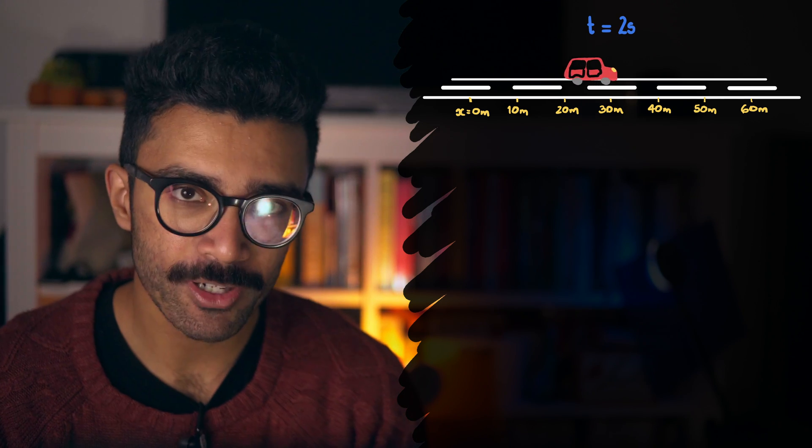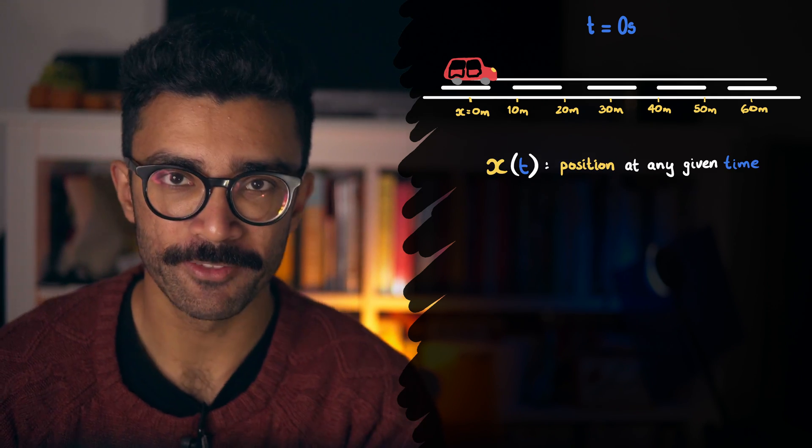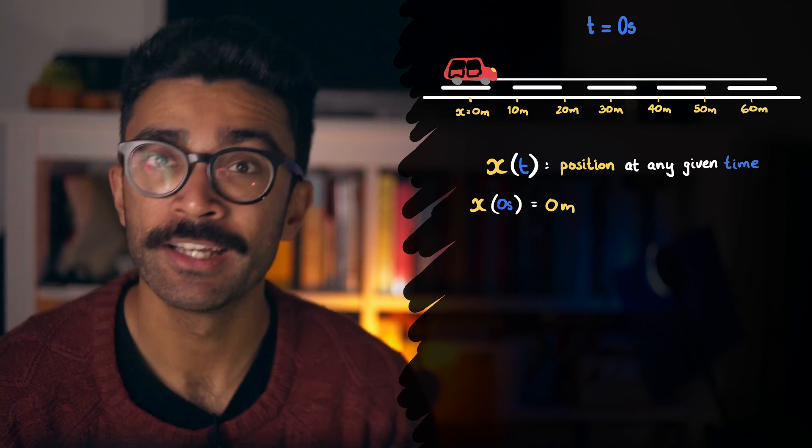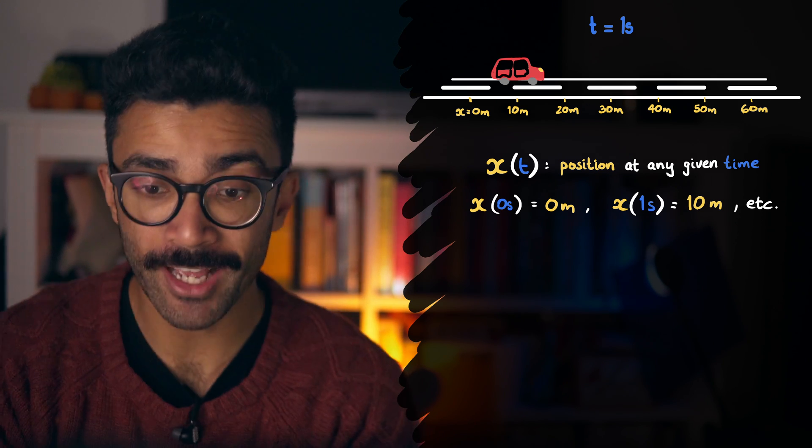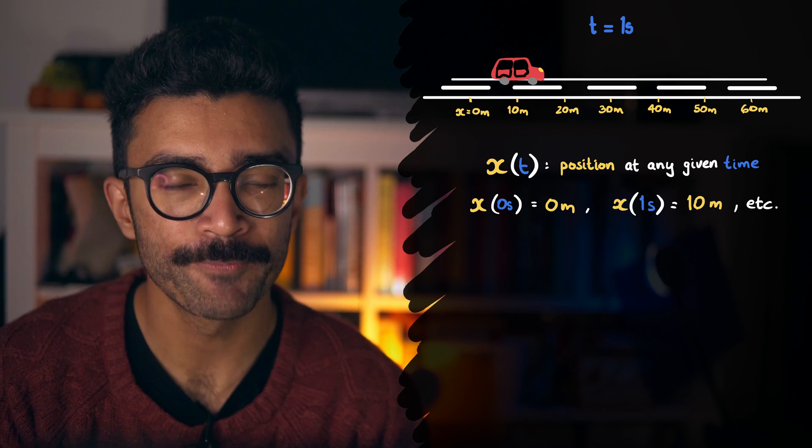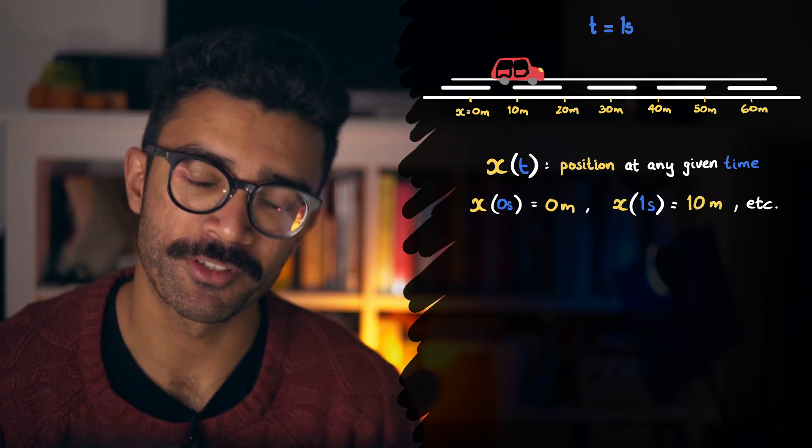Now normally we measure car speeds in kilometers per hour or miles per hour, but we'll go with meters per second in this video, so we stick with the SI base units because we're proper physicists. Anyway, so we can say what the position of the car is at any given point in time. Now x of t is the function that tells us the position, and we can say that x of 1 second is equal to 10 meters, meaning that at a time of t equals 1 second, the car is at x equals 10. And we can do this for any other point in time that we want to study.